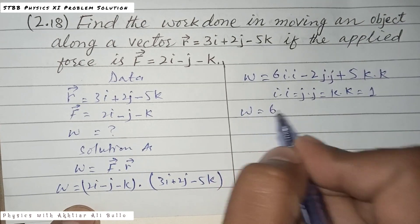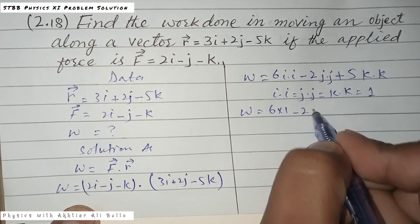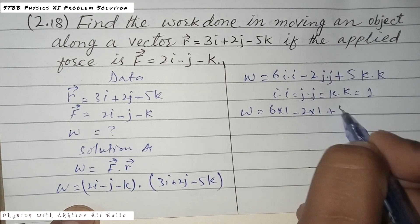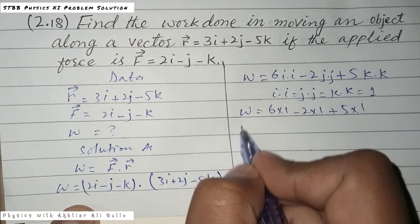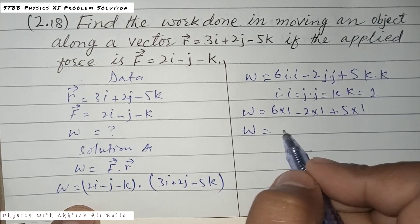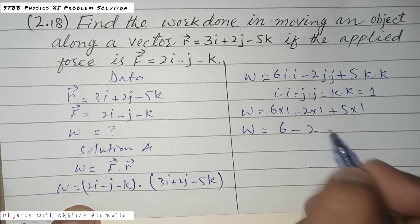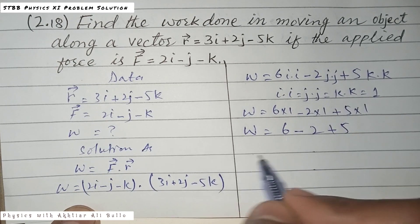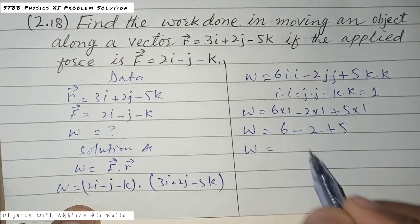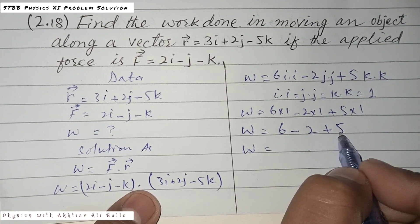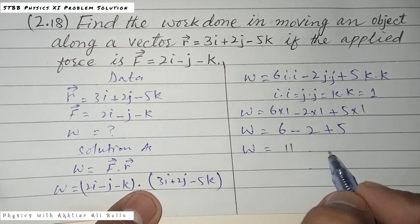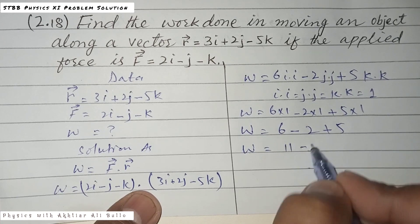Work done equals 6 times 1 minus 2 times 1 plus 5 times 1. So work done equals 6 minus 2 plus 5, which is 11 minus 2.